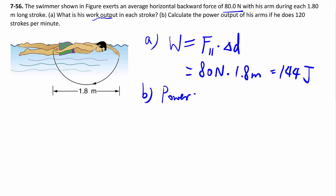B, power output. Again, power is how much work you do over how much time. Now they don't tell us how much time a stroke is, but they tell us how much time it takes for 120 strokes.